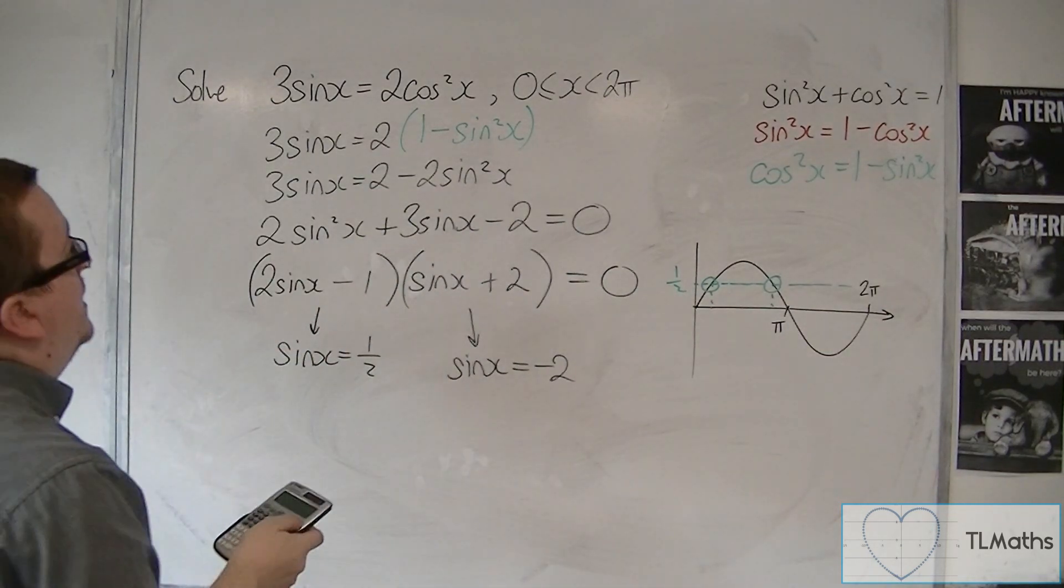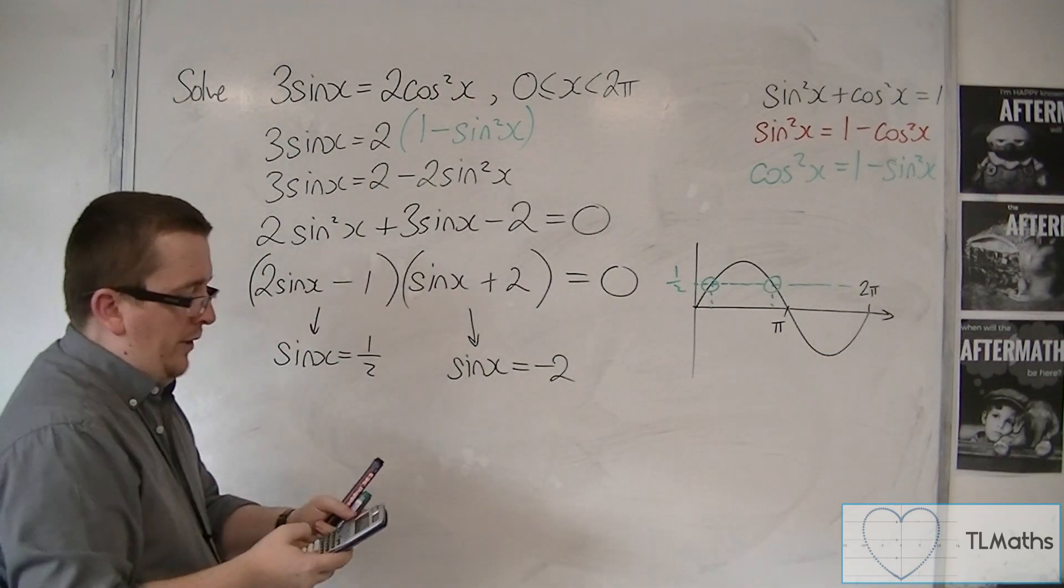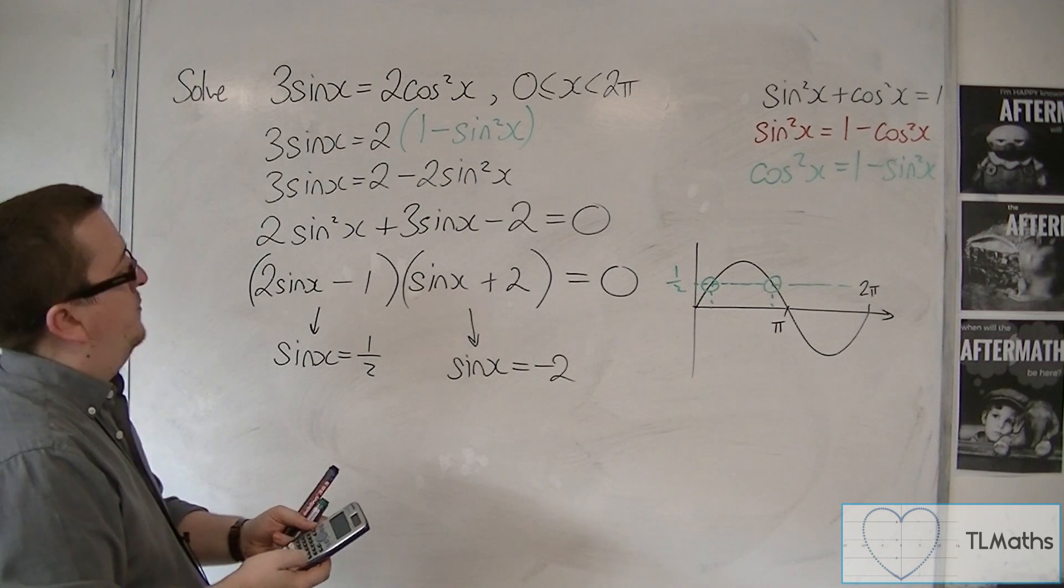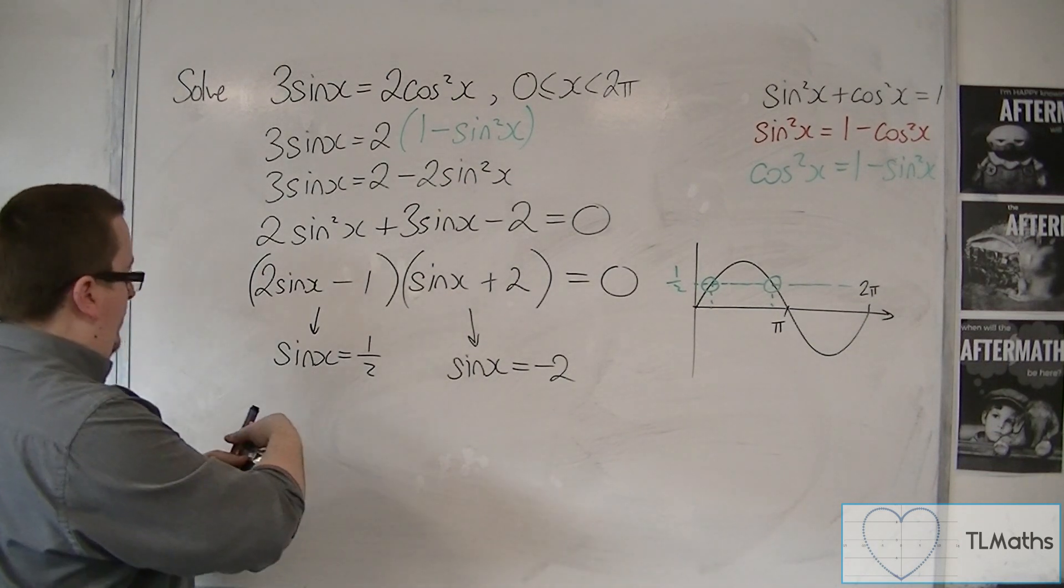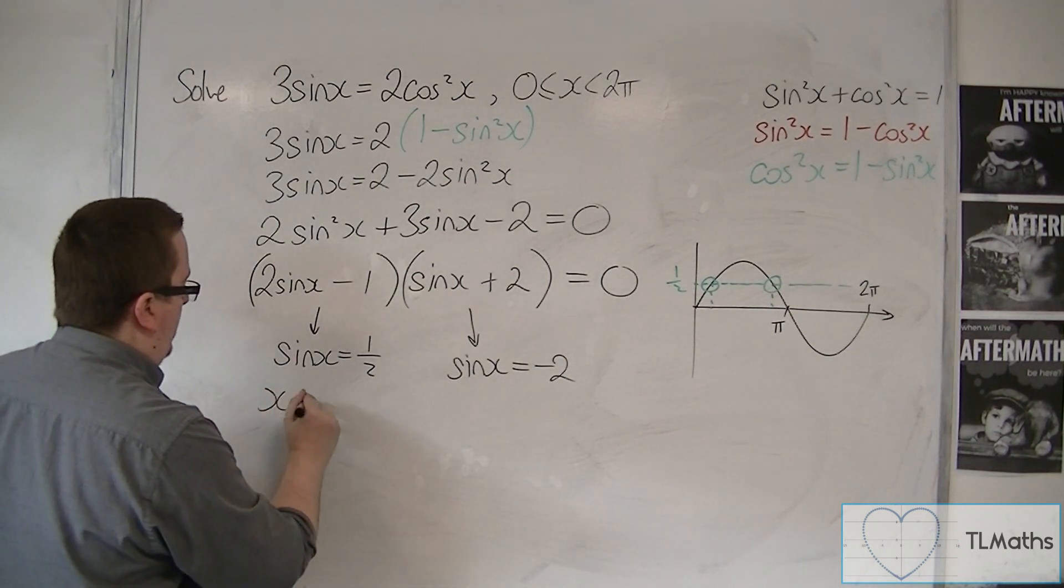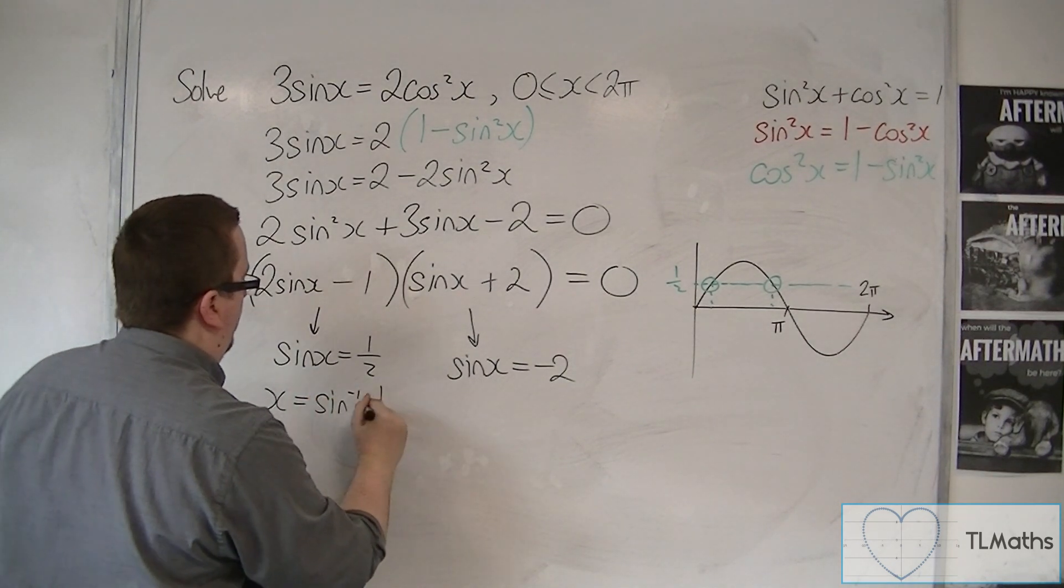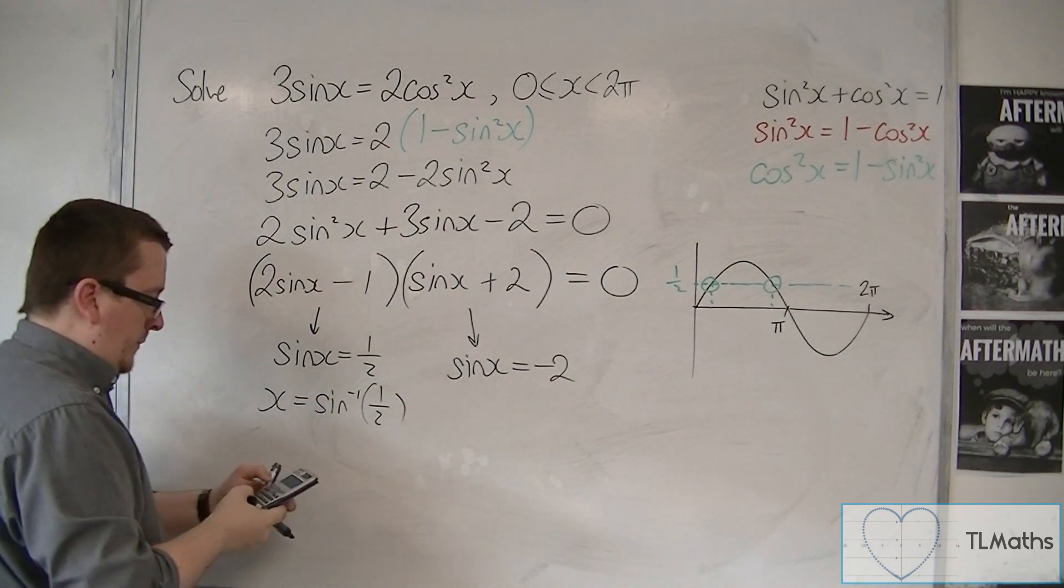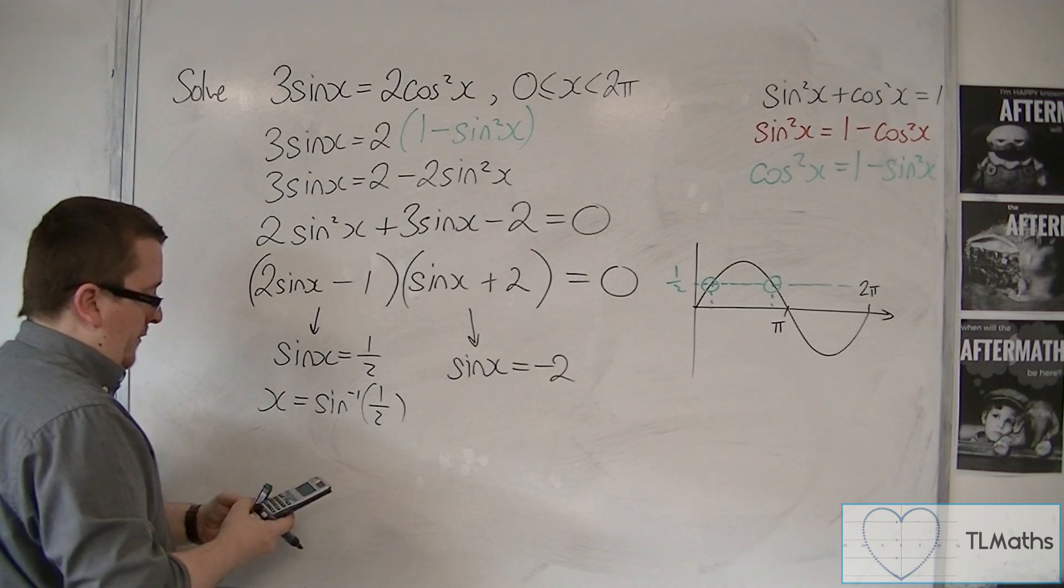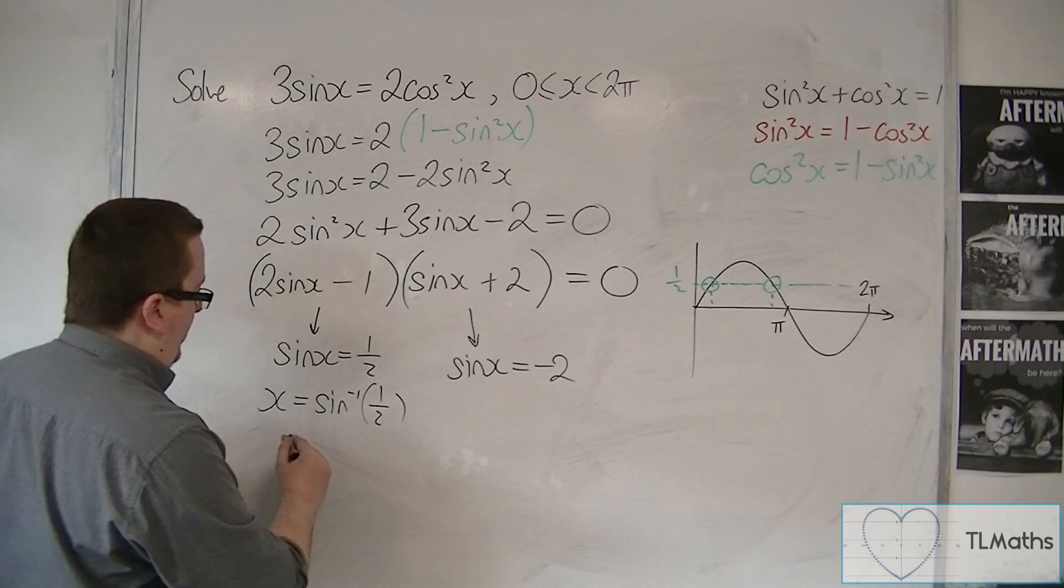So making sure your calculator is in radians, so shift mode and then number 4. We can do inverse sine. So x is the inverse sine of 1 half. Inverse sine of 1 half is pi over 6.